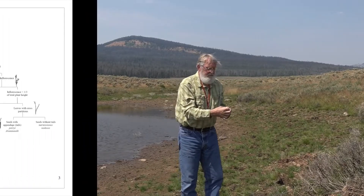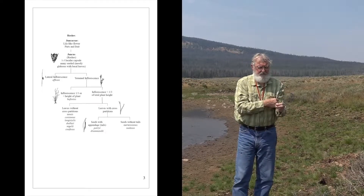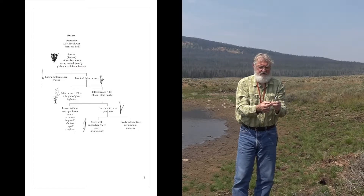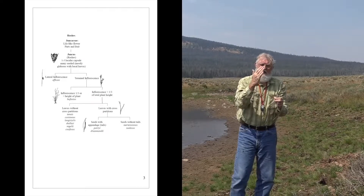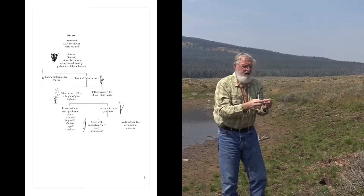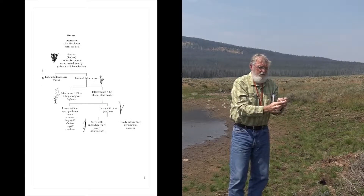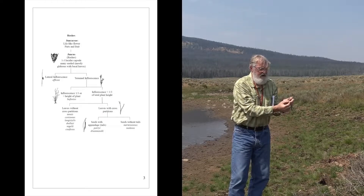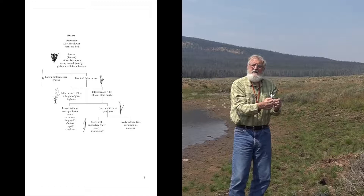The next question is about the leaves. Many Juncus leaves have little divisions and internal partitions called septate nodes. You take your finger, slightly squeeze, and pull it up the stem, and you can feel those partitions. That takes you to one group. So I have a group with terminal inflorescence and cross partitions — little cross walls inside the leaves — and another group of Juncuses that don't have that cross partition.